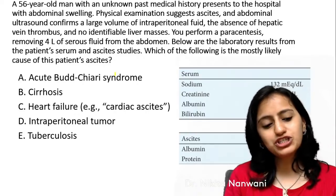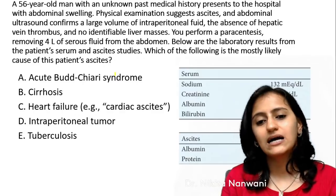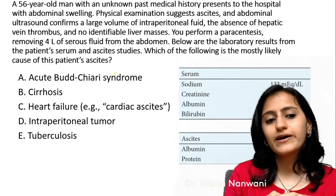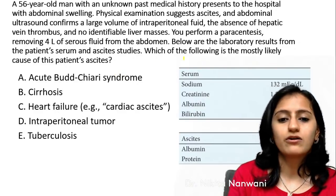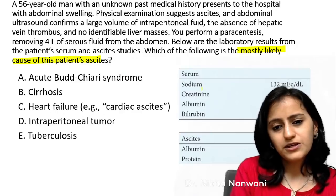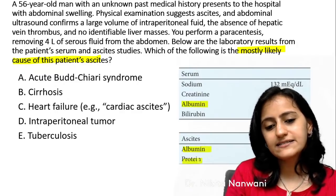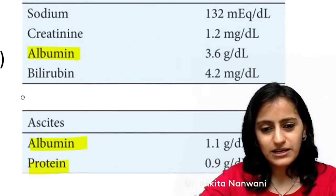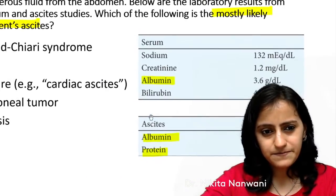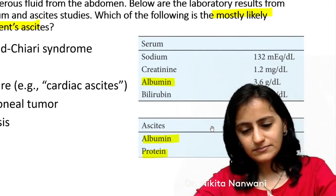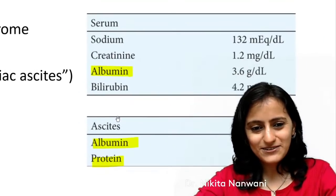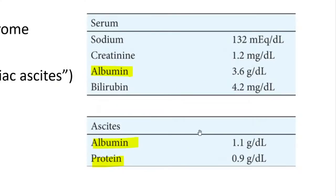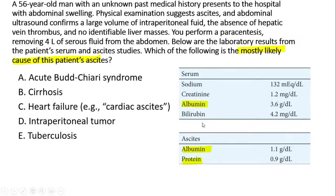Now there is a practice question — it's a lengthy question, but the clue is always to read from the last line. You are given serum albumin, ascitic albumin, and ascitic protein values. Let me show you the values clearly so you can solve it.